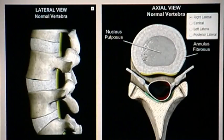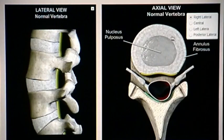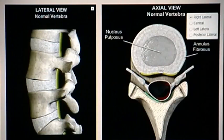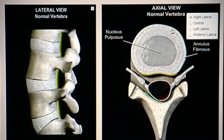Moving over to our disc itself, you can see that from the top view many people describe the disc as looking much like a jelly-filled donut, or others describe it as an egg lying in a pan. The outer wall of the disc is known as the annulus, and it's layered together much like the rings of an onion. It contains a pressurized jelly-like substance filled with nutrients. Together, these two entities form your spinal shock absorbers, once again known as a spinal disc.